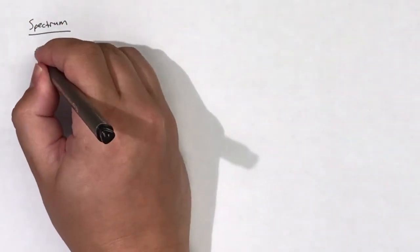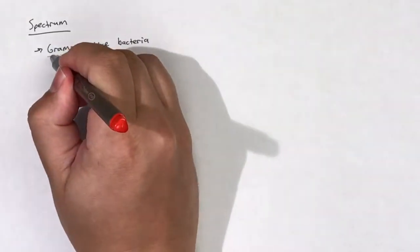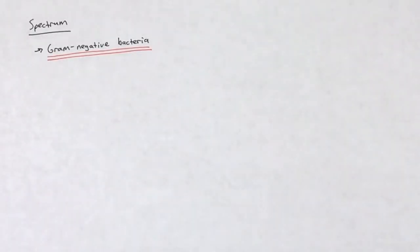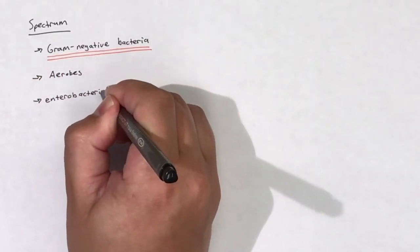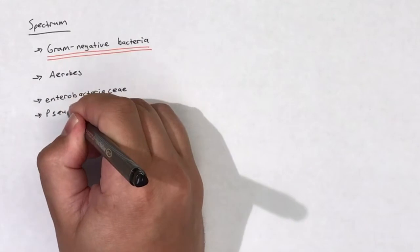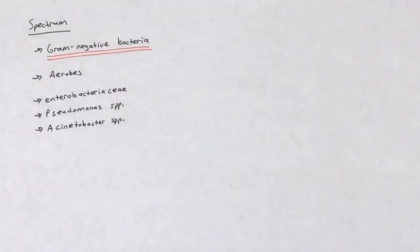Polymyxins are known for their activity in gram negative bacteria. It is important to note that polymyxins are only active in gram negative bacteria. Furthermore, polymyxins are primarily active against aerobes and not anaerobes. Polymyxins are active against Enterobacteriaceae, Pseudomonas species, and Acinetobacter species.